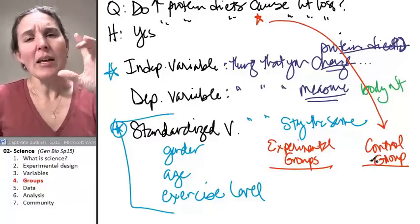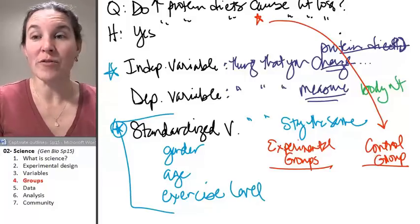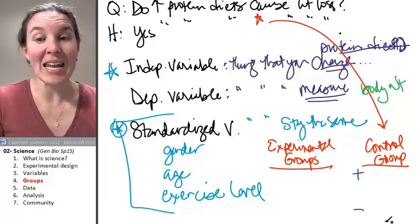So sometimes, not always, but sometimes you have two different flavors of control groups. And so you can have a positive control and you can have a negative control.